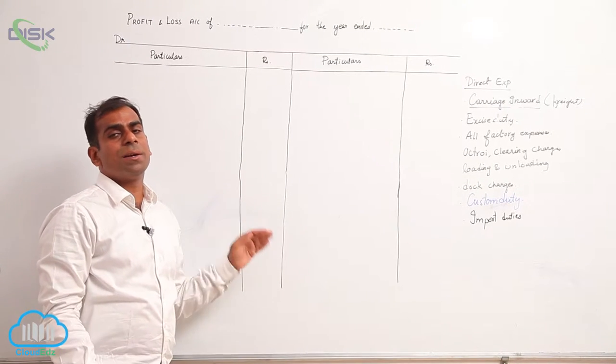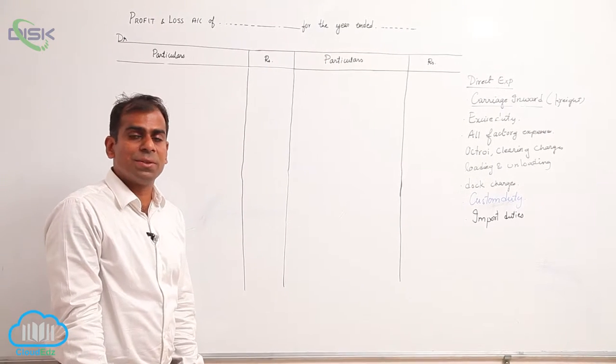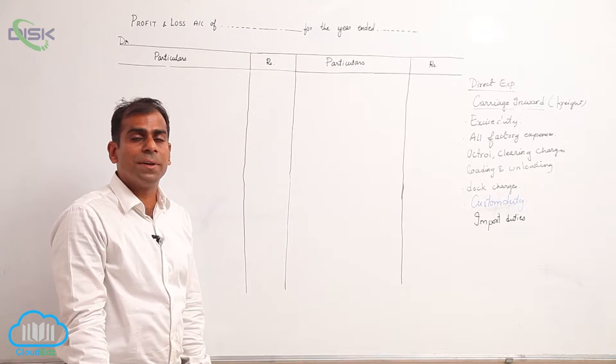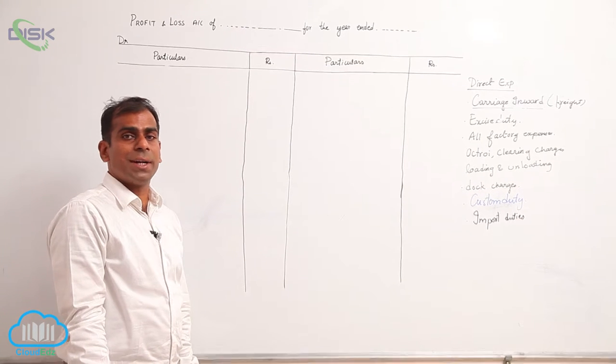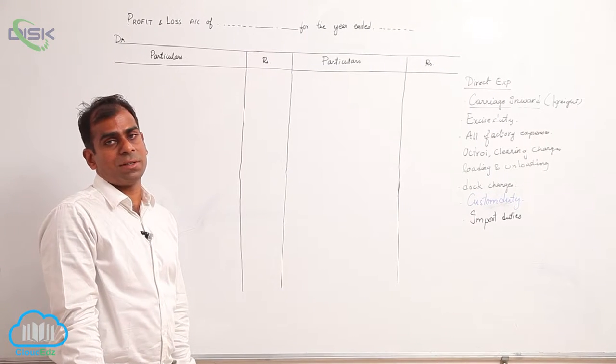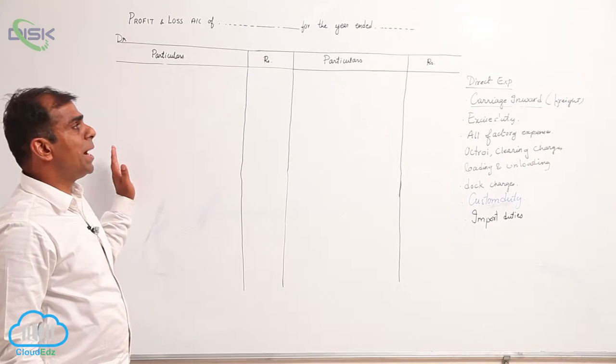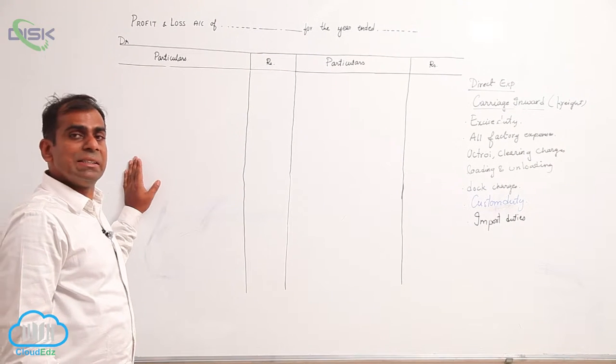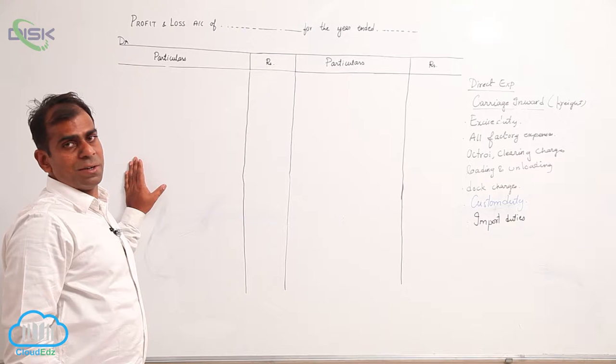As part of your final accounts you are preparing income statement. So income statement consists of manufacturing account, trading account, and profit and loss account. So the concluding part of your income statement is preparation of profit and loss account.